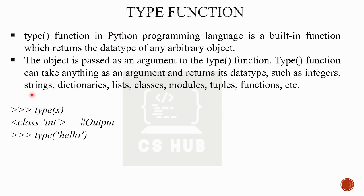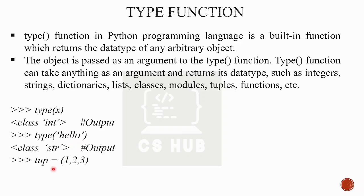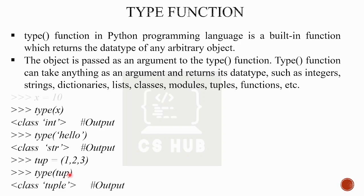For example, if x equals 2 or x equals 3, type(x) returns 'class int', meaning integer. If we call type('hello'), it returns 'class str' — string. If we define a tuple: tuple equals (1, 2, 3), then type(tuple) returns 'class tuple'.